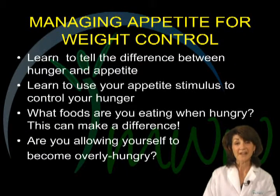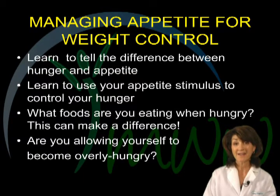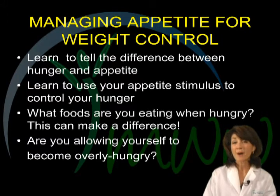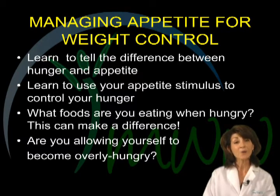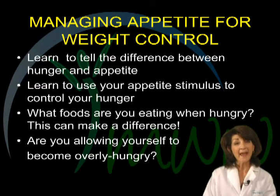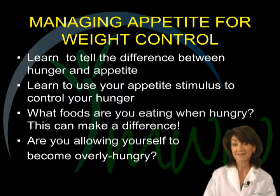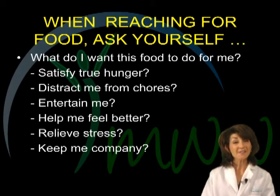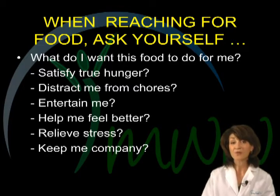To manage appetite for weight control, it is important to learn to tell the difference between hunger and appetite. You can learn to use your appetite stimulus to control your hunger by evaluating external influences. Consider what foods you are eating when you are hungry — these choices can make a real difference. And think about whether you are allowing yourself to become overly hungry between meals. One helpful way to find out if you are experiencing real physical hunger or an externally stimulated appetite is to ask yourself: What do I want this food to do for me?